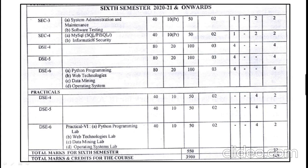Skill enhancement course four paper covers MySQL and Information Security. The student can choose any one in skill enhancement course four, and can learn this paper for 50 marks. They can appear for the external exam for 40 marks, and 10 marks would be awarded as internal marks.